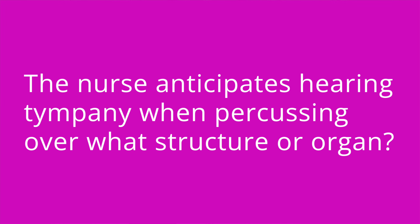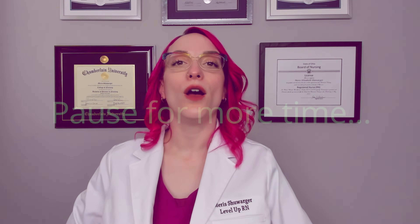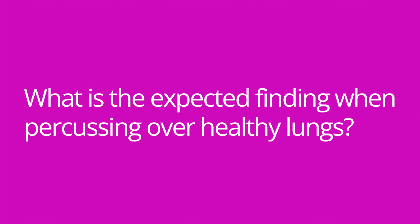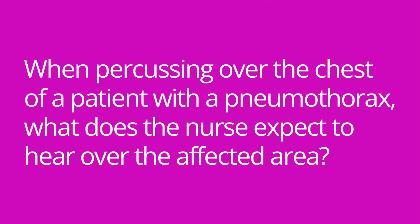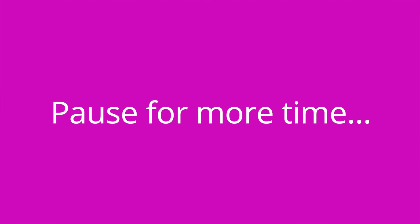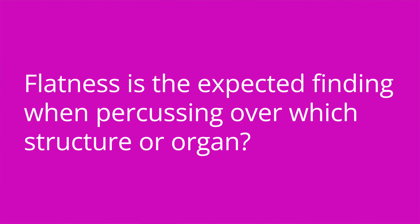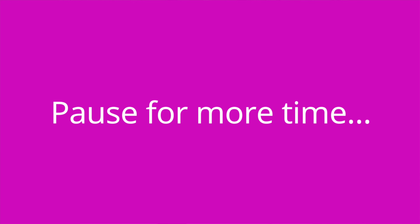That is it for our review of percussion findings associated with the chest, the abdomen, and other structures. Now here are some quiz questions to test your knowledge. The nurse anticipates hearing tympani when percussing over what structure or organ? — Over hollow organs, such as the stomach or bowels. When percussing over the chest of a patient with a pneumothorax, what does the nurse expect to hear over the affected area? — Hyperresonance. Flatness is the expected finding when percussing over which structure or organ? — Over muscles and bone.